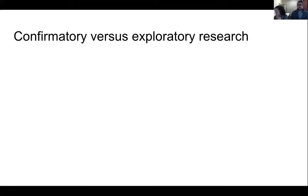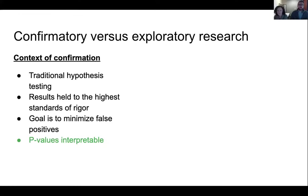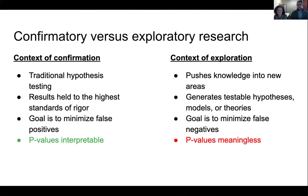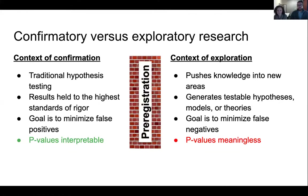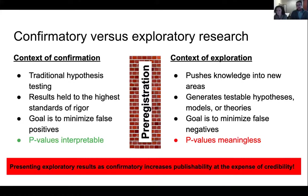In the context of confirmation, we're talking about traditional hypothesis testing where results are held to the highest standards of rigor. The goal is to minimize false positives, and in this mode the p-values are actually interpretable. In the context of exploration, you are pushing into new areas, generating testable hypotheses, models, or theories, with the goal to minimize false negatives — and here p-values are meaningless. Pre-registration is simply specifying what you are setting out to confirm versus what you find incidentally. Presenting exploratory results as confirmatory increases publishability at the expense of credibility, so it's important to delineate between the two.